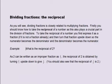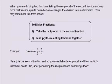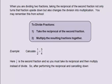For example, what is the reciprocal of 2? As 2 can be written as the improper fraction 2/1, the reciprocal of 2 is obtained by turning 2/1 upside down to give 1/2. You should also see that the reciprocal of 1/2 is 2. When you are dividing two fractions, taking the reciprocal of the second fraction not only turns that fraction upside down, but also changes the division into multiplication. To divide fractions: one, take the reciprocal of the second fraction; two, multiply the resulting fractions together.